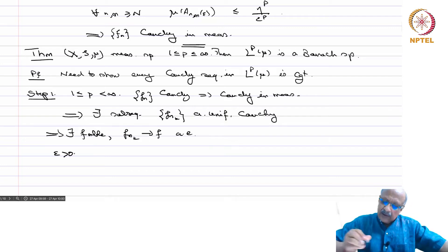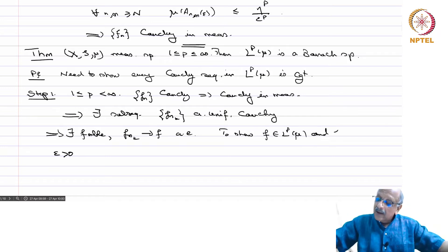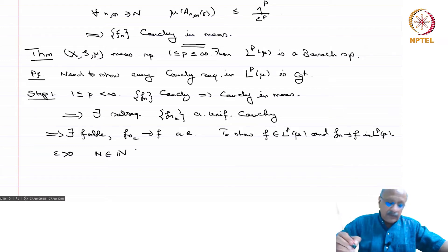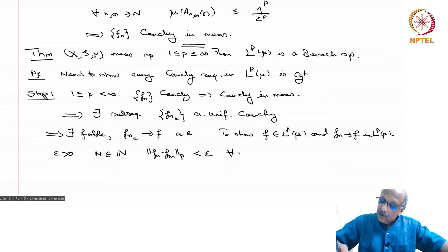So there exists f measurable such that f_{n_k} converges to f pointwise almost everywhere. We now have a candidate for the limit. We have to show f belongs to LP(mu) and f_n converges to f in LP(mu). Let epsilon > 0 and let N be in the natural numbers such that norm(f_n - f_m)_p < epsilon for all n, m ≥ N.